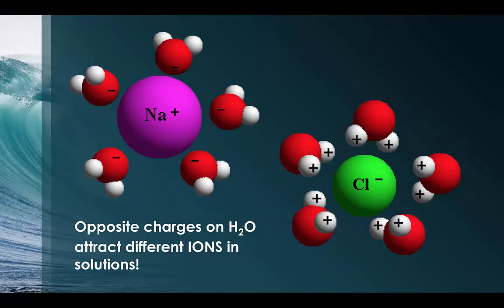If you were to drop sodium chloride, or table salt, into liquid water, you would notice that the sodium ions, being positive, are going to be attracted to the negative sides — the oxygens — of all the water molecules. And the chloride ion with its negative charge is going to be attracted to all the positive hydrogens. Water actually dissociates or separates the two ions from each other, so it was once a crystal but now they're free-floating aqueous ions.